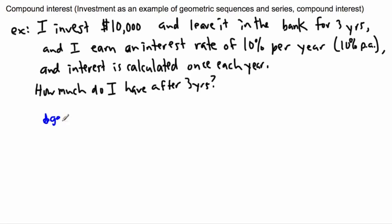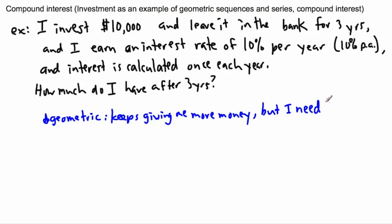Well this is, we could see it as it's geometric. Geometric because we have a common ratio. So that's because it keeps, I mean they keep giving me more money. I'm going to need to find the ratio, or in other words, not the rate, but I need the ratio, the common ratio.